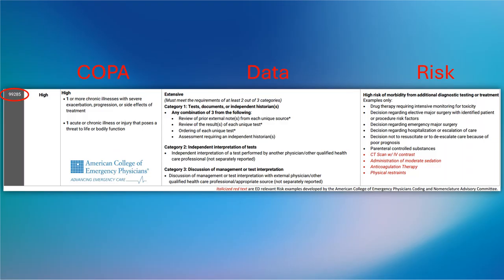To summarize: there are three columns to bill for a level 5 chart — the COPA, the data, and the risk. For COPA, document all medical problems addressed at the visit and add 'acute' or 'severe' to the diagnosis if appropriate. For the data column, document any review of notes from outside your ED as well as discussions with EMS or family. Use the phrase 'independent interpretation' instead of just 'reviewed' for EKGs or plain films. Make sure to document discussions with consultants and hospitalists. In the risk column, be aware of medications requiring intensive monitoring — especially IV contrast for CT scans. If a high-risk procedure was performed or you gave IV or IM benzodiazepines or opiates, document it. Please refer to the ASAP guidelines linked in the description if you have any questions.